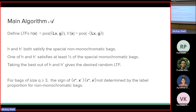Now the problem: when you have bags of size three, for a non-monochromatic bag X1, X2, X3 where two of them are 1 and one is 0, if you look at the product R* · X1 times R* · X2, the sign is no longer determined — unlike in the bag-size-2 case. For bag size 2, the sign was determined by whether the bag is monochromatic or non-monochromatic. For size 3, you don't know the sign. So what can you do?